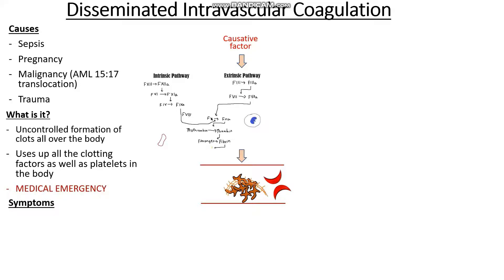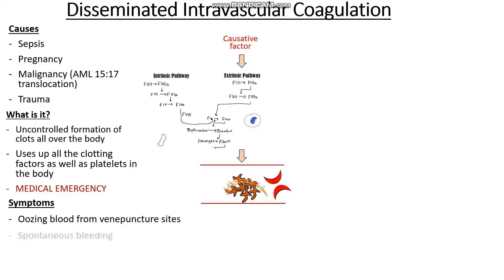So what sort of symptoms may we see in a patient with DIC? Obviously we're going to have the presence of one of the risk factors or causes we've discussed. Symptoms in patients at higher risk of bleeding or life-threatening bleeding include things like oozing from venipuncture sites — where blood has been taken before and they start spontaneously bleeding from them — and spontaneous bleeding from other sites such as the gums or nose.